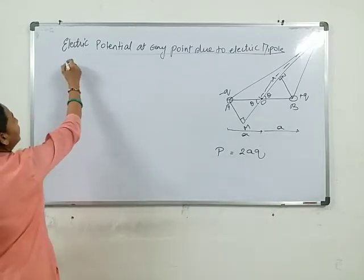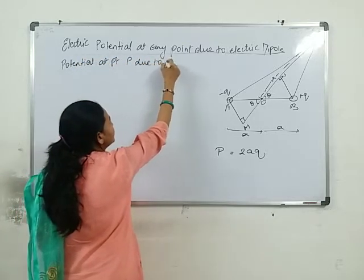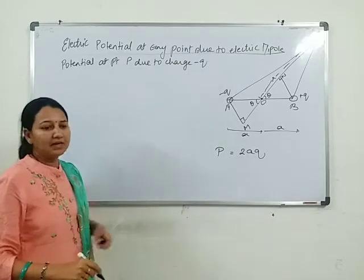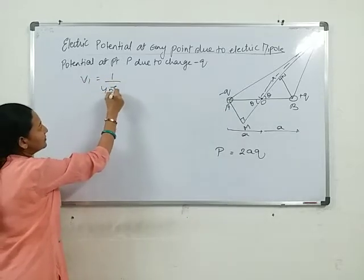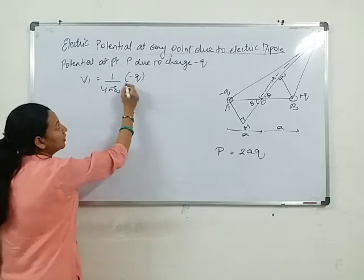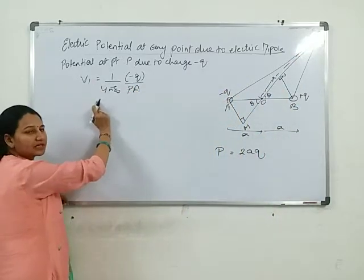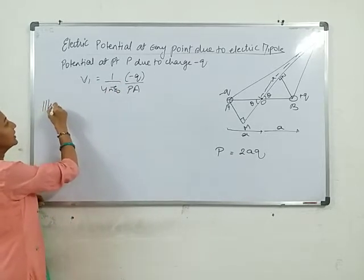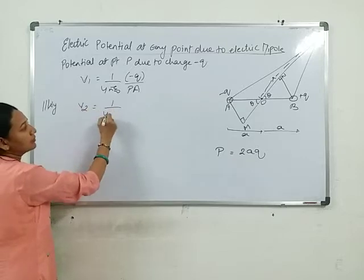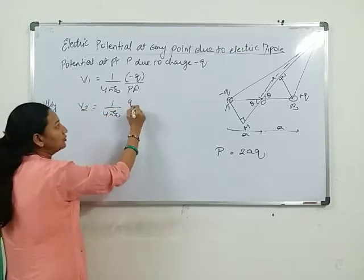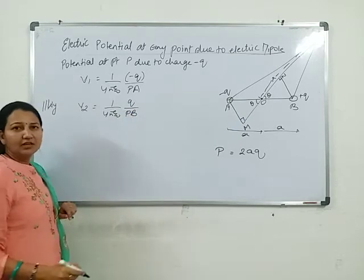Now we start. The potential: let's find the potential at point P due to charge minus Q. The formula: V1 is equal to one upon four pi epsilon zero, minus Q upon PA. Similarly, potential at point P due to charge plus Q: V2 is equal to one upon four pi epsilon zero, plus Q upon PB.